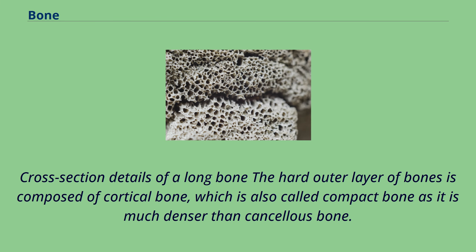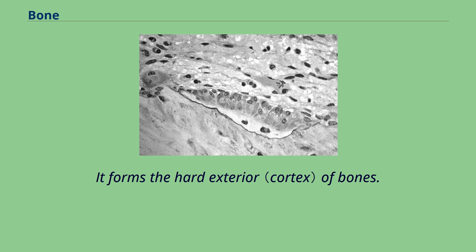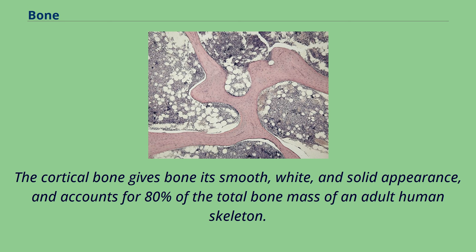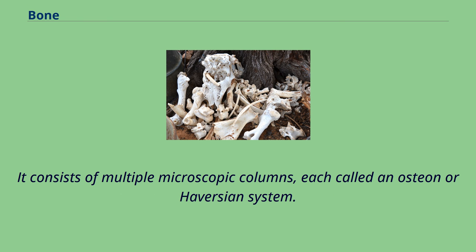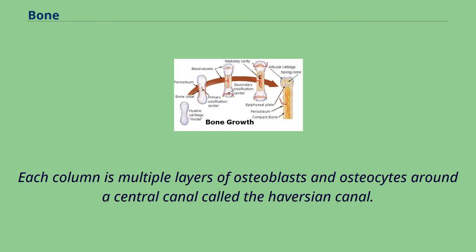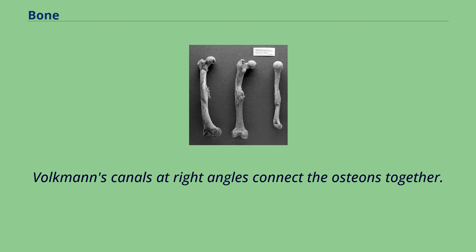The hard outer layer of bones is composed of cortical bone, also called compact bone, as it is much denser than cancellous bone. It forms the hard exterior of bones and gives bone its smooth, white, and solid appearance, accounting for 80% of the total bone mass of an adult human skeleton. It facilitates bone's main functions: to support the whole body, protect organs, provide levers for movement, and store and release chemical elements, mainly calcium. It consists of multiple microscopic columns, each called an osteon or Haversian system. Each column is multiple layers of osteoblasts and osteocytes around a central canal called the Haversian canal.